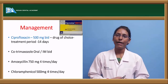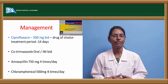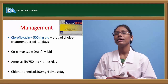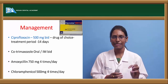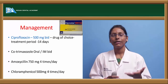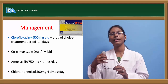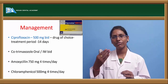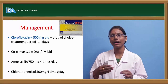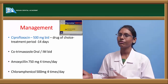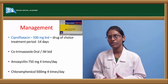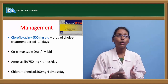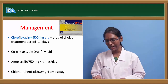Coming to management of typhoid and paratyphoid: first is symptomatic fever treatment. Fluoroquinolones — specifically ciprofloxacin — is the drug of choice if the Salmonella bacilli is not resistant. However, in most cases the Salmonella bacilli is resistant, so other modes of treatment include co-trimoxazole, ampicillin, amoxicillin 750 mg four times daily, and chloramphenicol 500 mg four times daily.